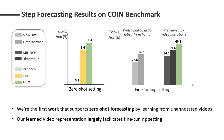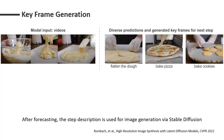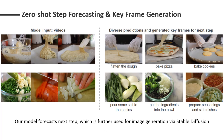Next, I will show some visualizations for our zero-shot forecasting. Given an input video recording previous steps, our model can forecast multiple predictions, such as flatten the dough and bake pizza. After forecasting, the predicted step can be used for keyframe generation. By using stable diffusion, we can visualize what would happen in the future. This is another example of zero-shot forecasting and keyframe generation.